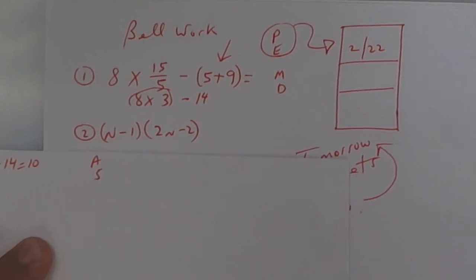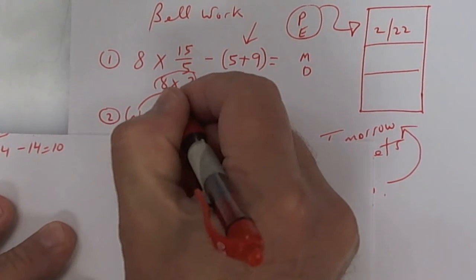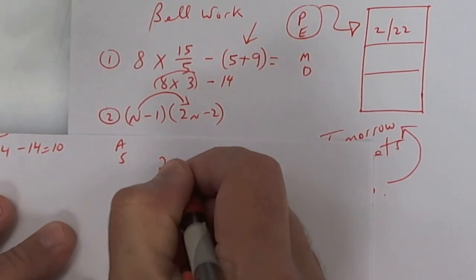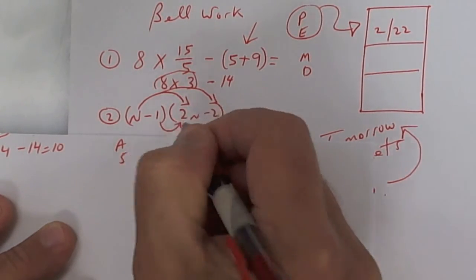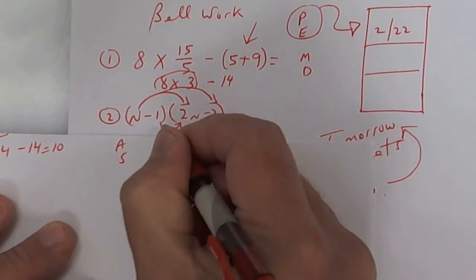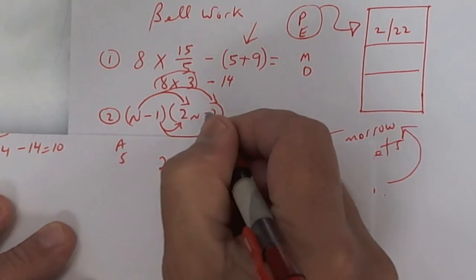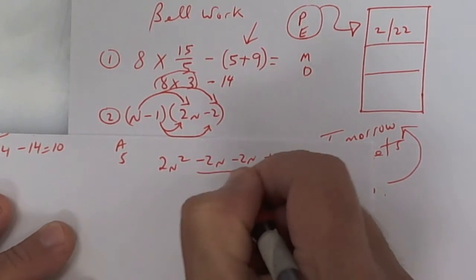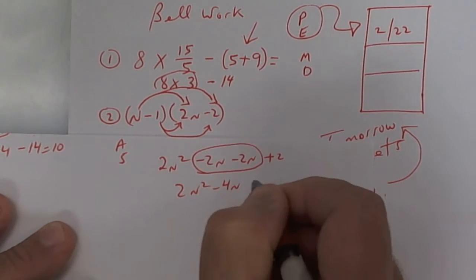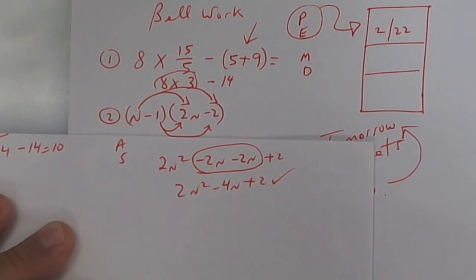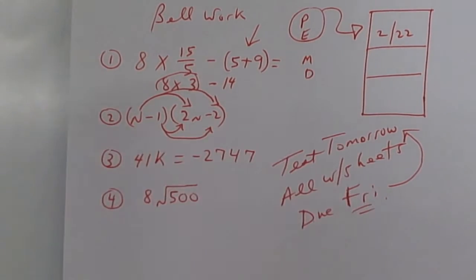On the next one you have to do FOIL. So draw your arrows. n times 2n is 2n squared, n times negative 2 is negative 2n, and then this times this is a negative 2n, and then this times this, a negative and a negative makes a positive 2. This becomes a negative 4n, so you get 2n squared minus 4n plus 2.